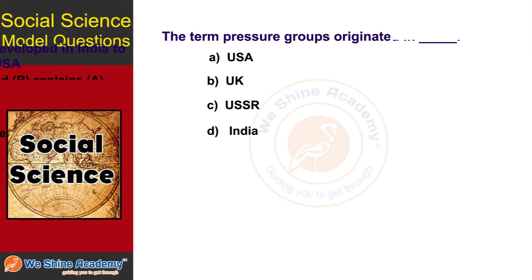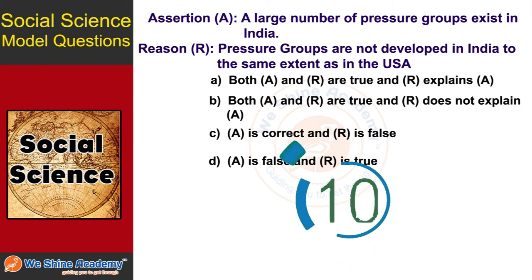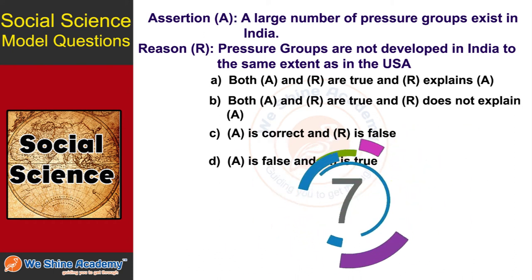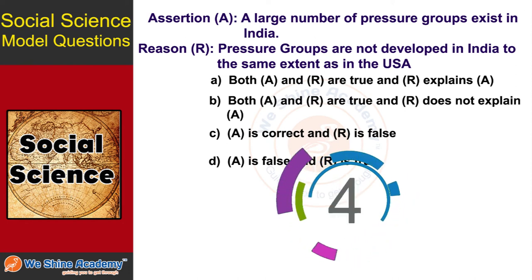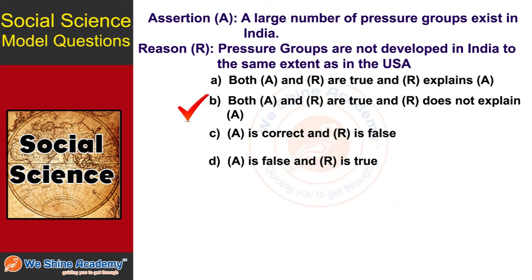The next question is an Assertion and Reason question. Assertion: A large number of pressure groups exist in India. Reason: Pressure groups are not developed in India to the same extent as in the USA. The answer is Option B: both A and R are true, and R does not explain A.